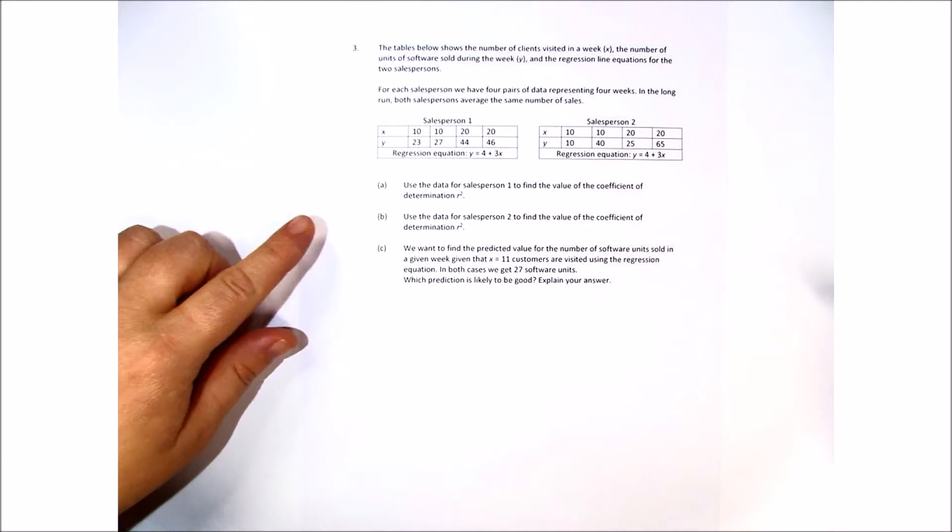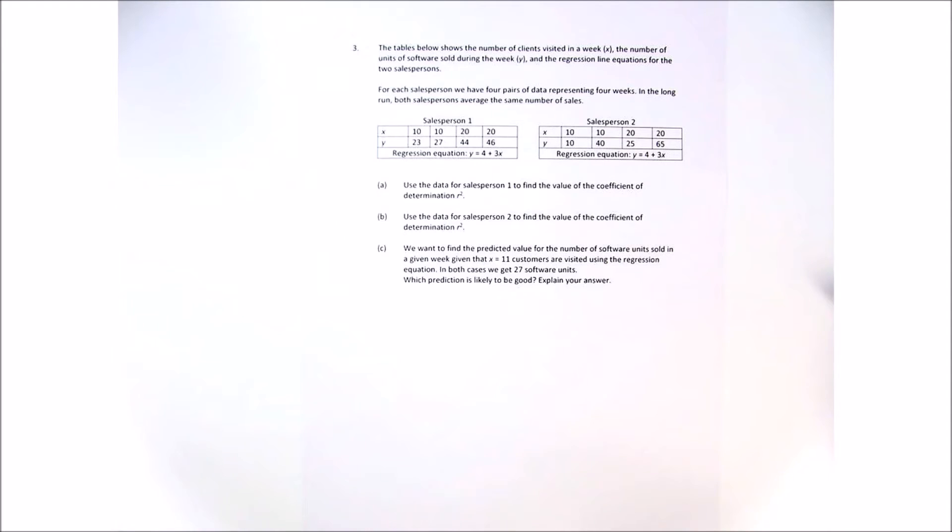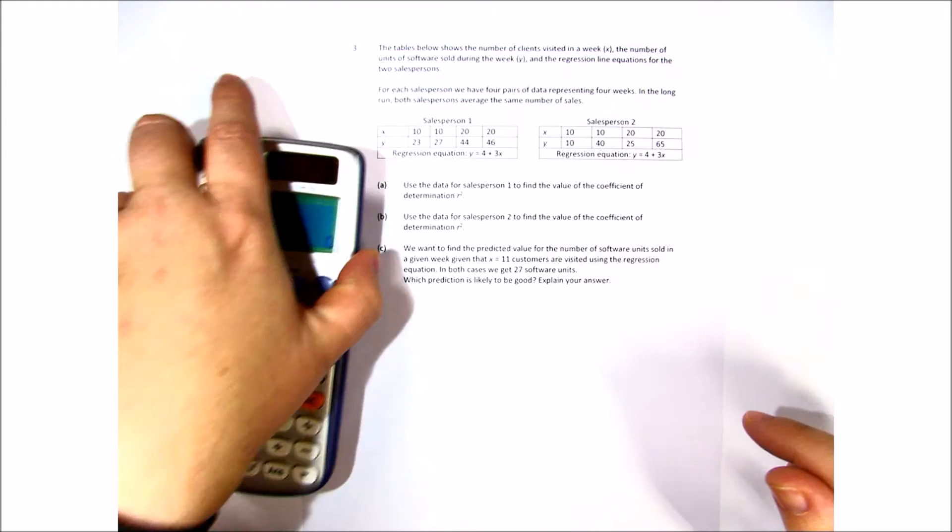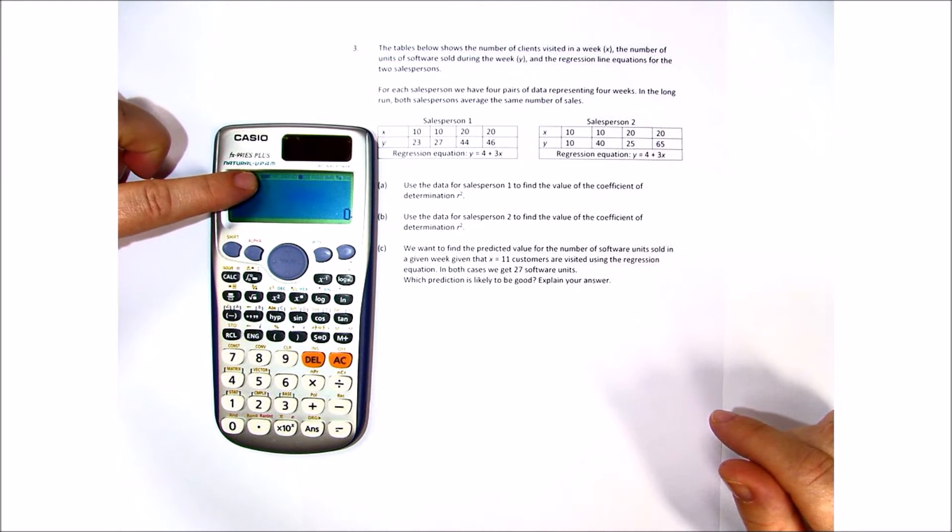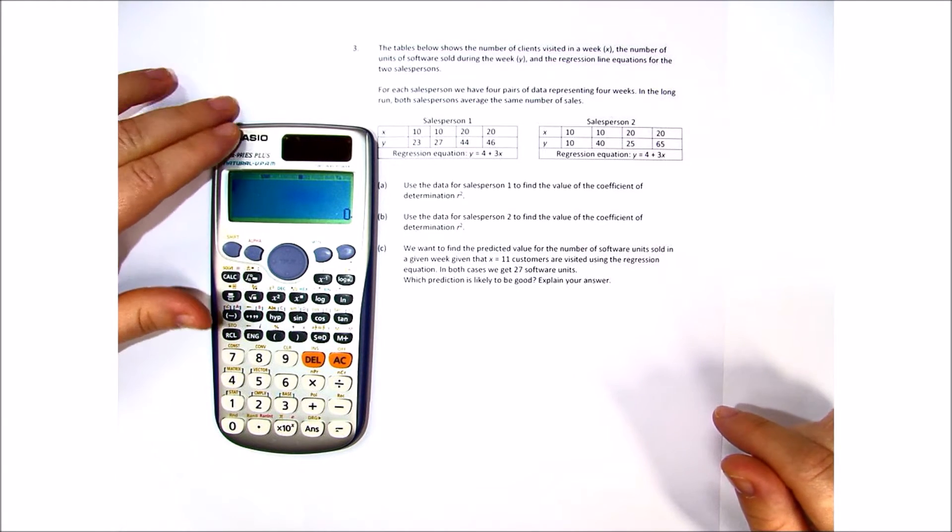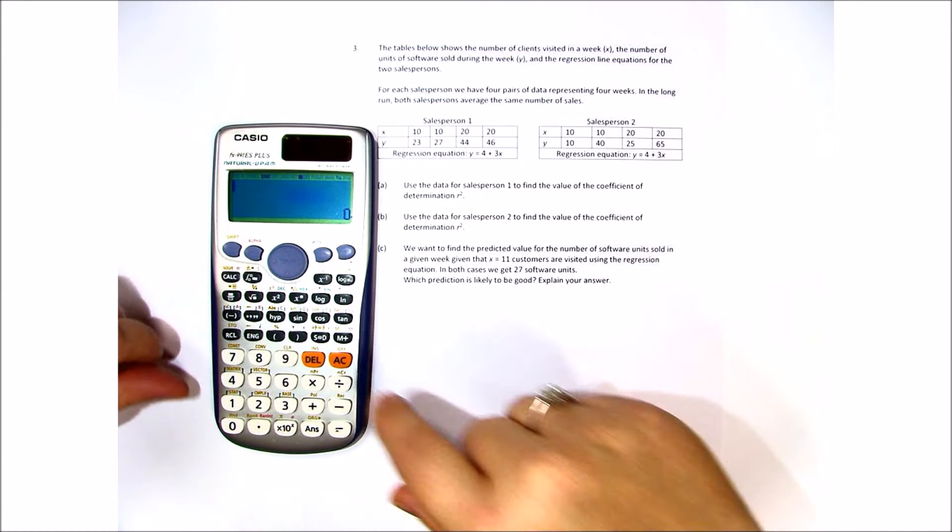Use the data for sales person 1 to find the value of the coefficient of determination. So for this we're going to need to get our calculator out and as you can see it's already on stat. We've turned the frequency off but if you need to go back and do that check out some of the other videos.